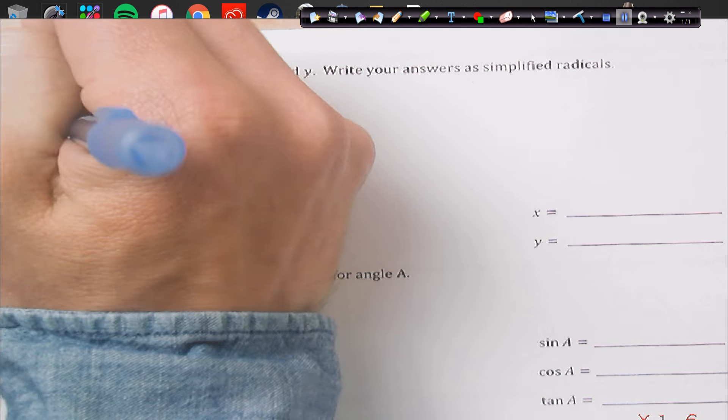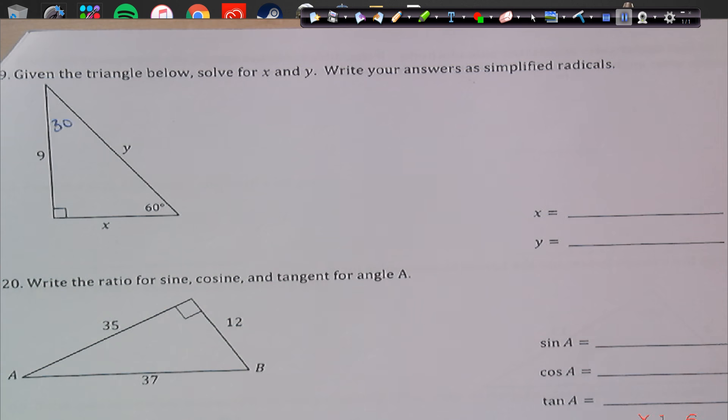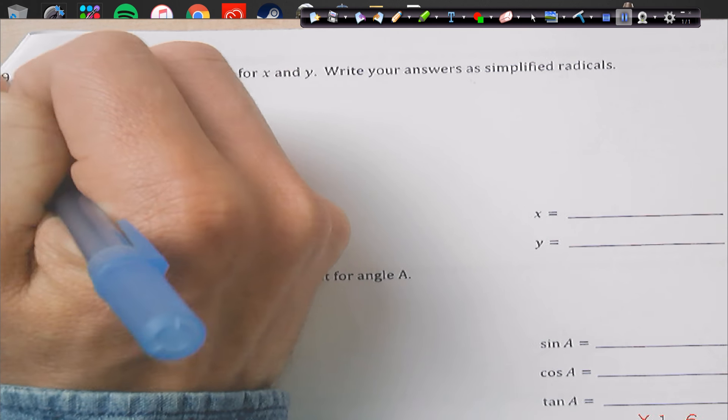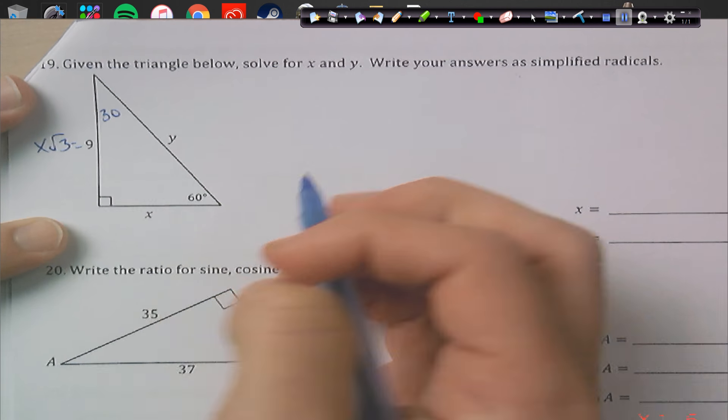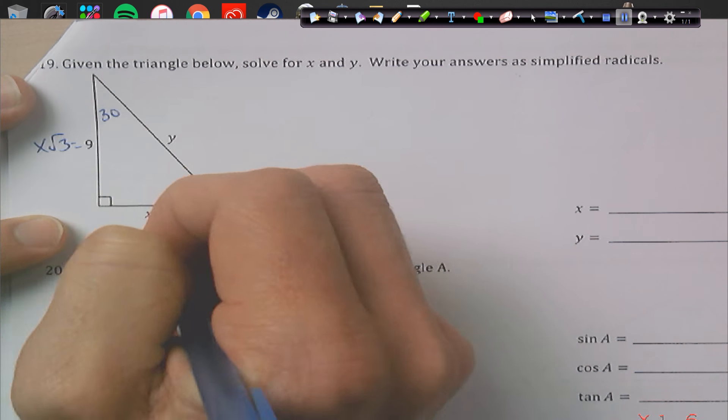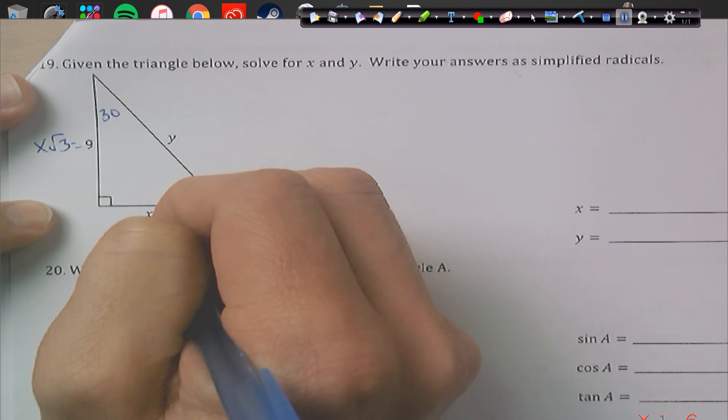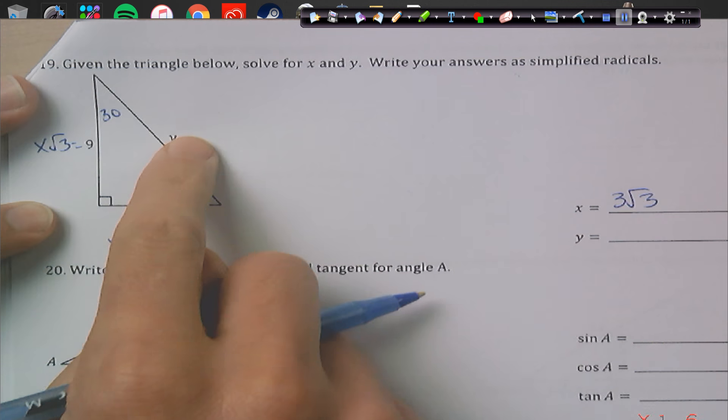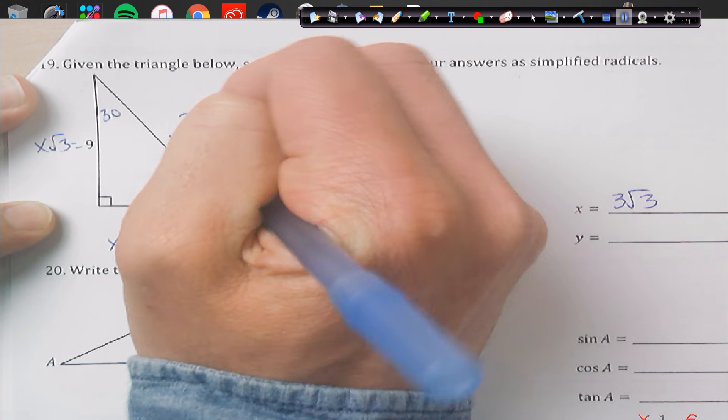All right. Again, 30. Okay. Now, we have the x rad 3 position. So, we have to divide it by 3. Multiply by rad 3. That will give me the x position. So, divide by 3. Multiply by rad 3 is 3 rad 3. And then up here is 2x. We just double it. So, that's 6 rad 3.